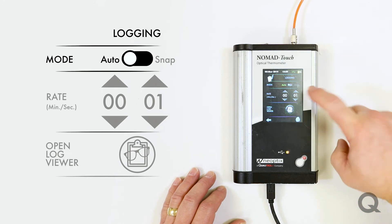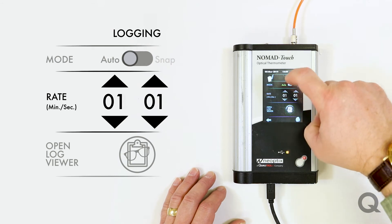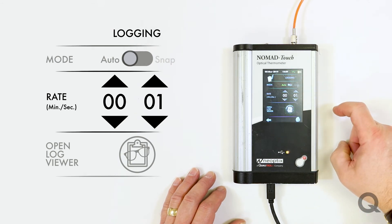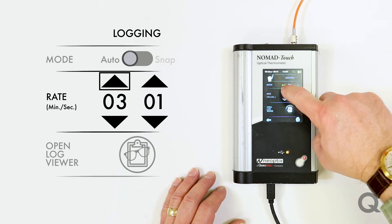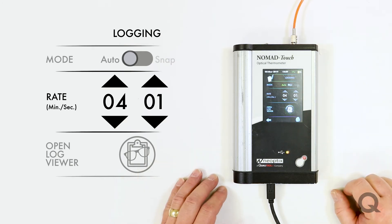You can set your rates. So, if you want something that's very fast, you can go down to a single second, or if you've got something that's more long-term, you can actually set it for things like four minutes.